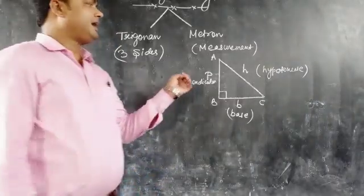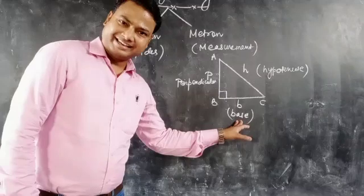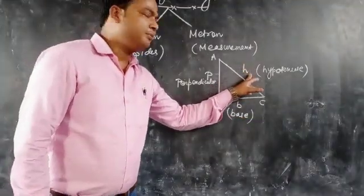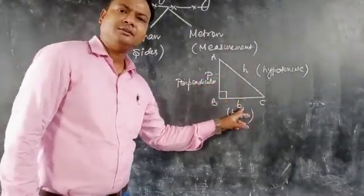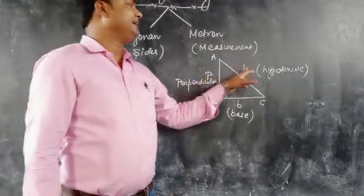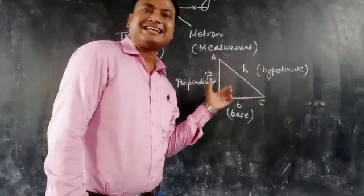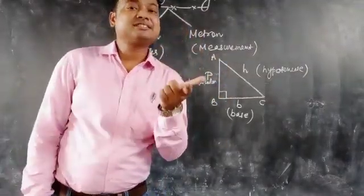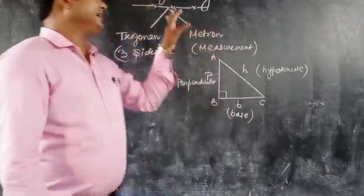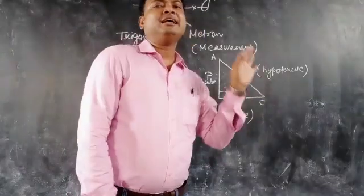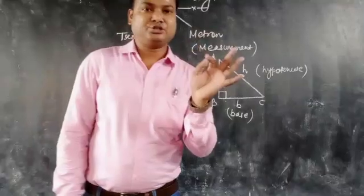Now we have to find the relation between all three sides. From H, we can find relations with P and B. From P, we can find relations with H and B. From B, we can find relations with P and H. Overall there are six relations, and these six relations are known as trigonometric ratios.